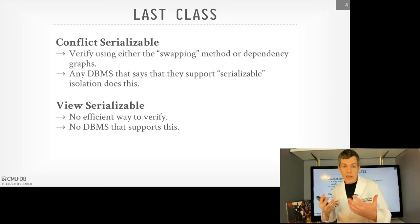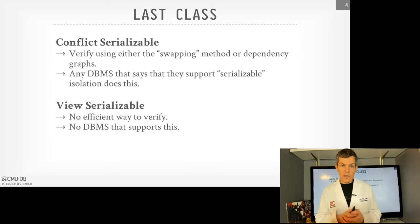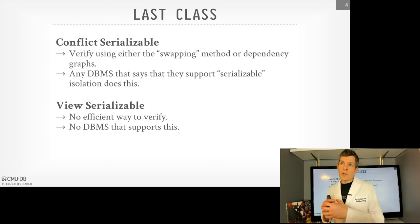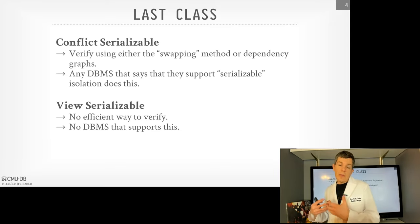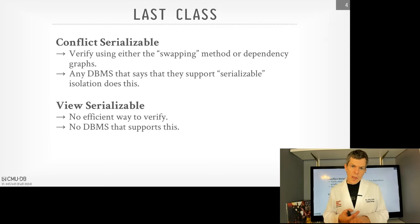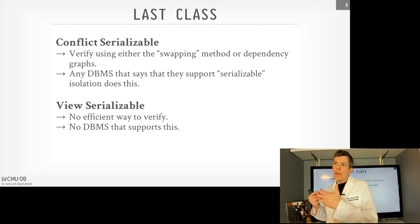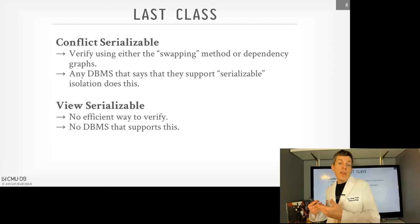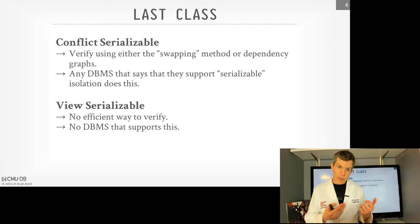Last class we were talking about the introduction to concurrent control, and we spent most of our time talking about ACID — atomicity, consistency, isolation, and durability. We spent most of our time discussing isolation, and in particular how we want the database system to be able to run transactions as if they were running one after another in serial order, but still interleave them to allow for better parallelism. And so we had this notion of serializable schedules, where the outcome of the database is as if transactions were executing in serial order, even though they were being interleaved.